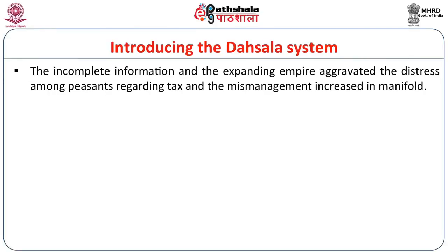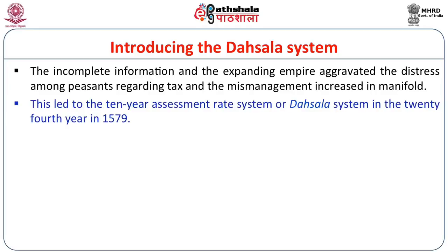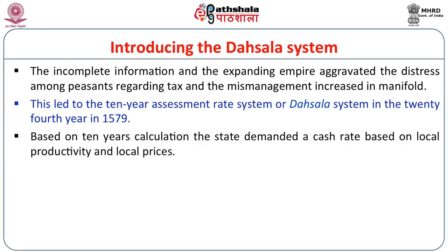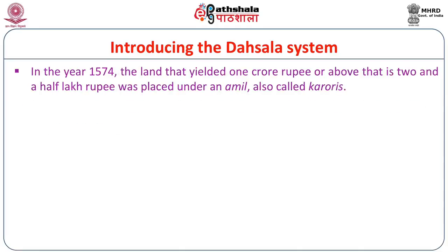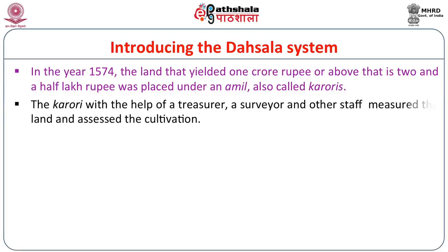The incomplete information and the expanding empire aggravated distress among the peasants regarding tax, and the mismanagement of the state regarding collection reached a new height. Thus a 10-year assessment system was introduced in the 24th year in 1579. Based on this 10-year calculation, the state demanded a cash rate based on long-term productivity and local prices. In 1574, land that yielded 1 crore Dams or above was placed under an official called the Karoris. The Karori, with the help of a treasurer, a surveyor, and staff, measured the land and assessed the cultivation.